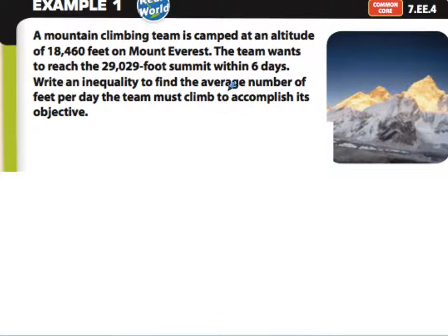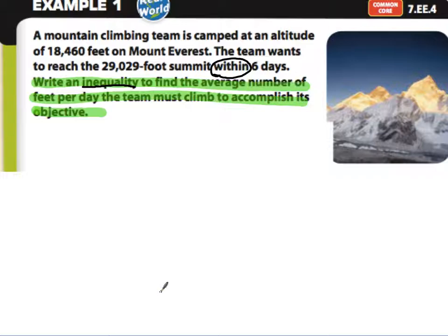First, we're going to look at what we need to do. It's asking us to write an inequality to find the number of feet per day to accomplish their objective. I'm going to underline the fact that they want an inequality. It's not an equation — there's not an exact number of feet they need to walk per day, because they can do it 'within' six days. Within is a really important word. If they do it in more than six days, they haven't met the expectation. If they do it in six days or fewer, they have. That's why we're writing an inequality and not an equation.